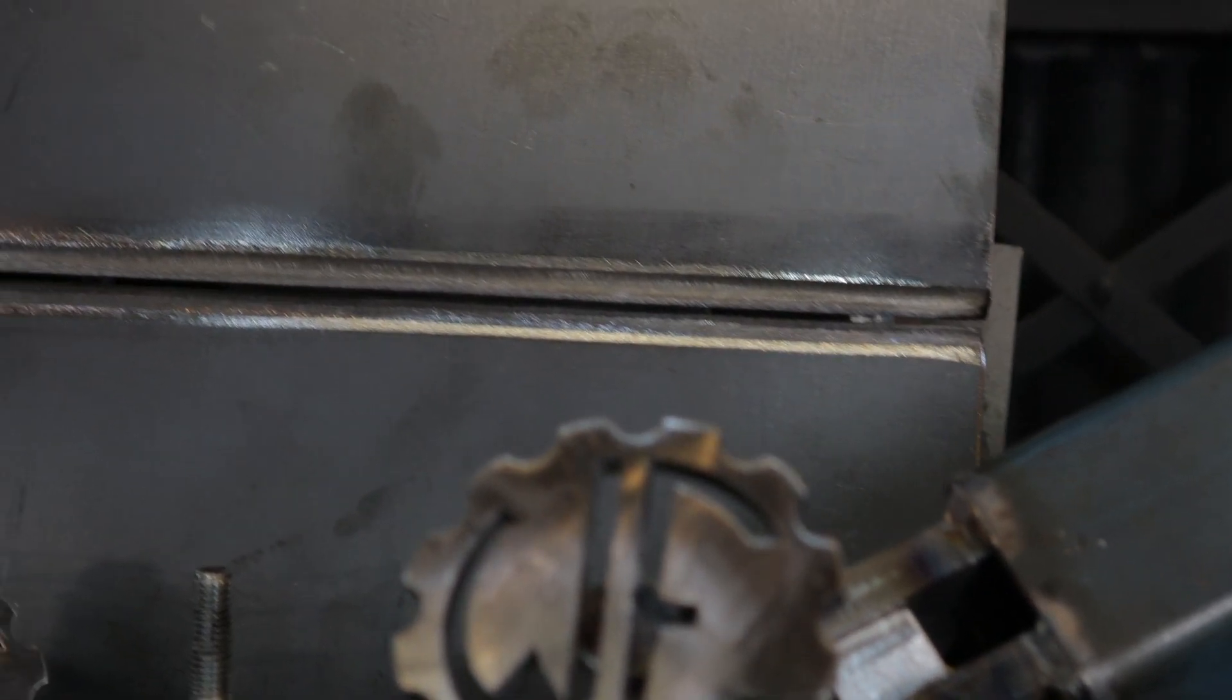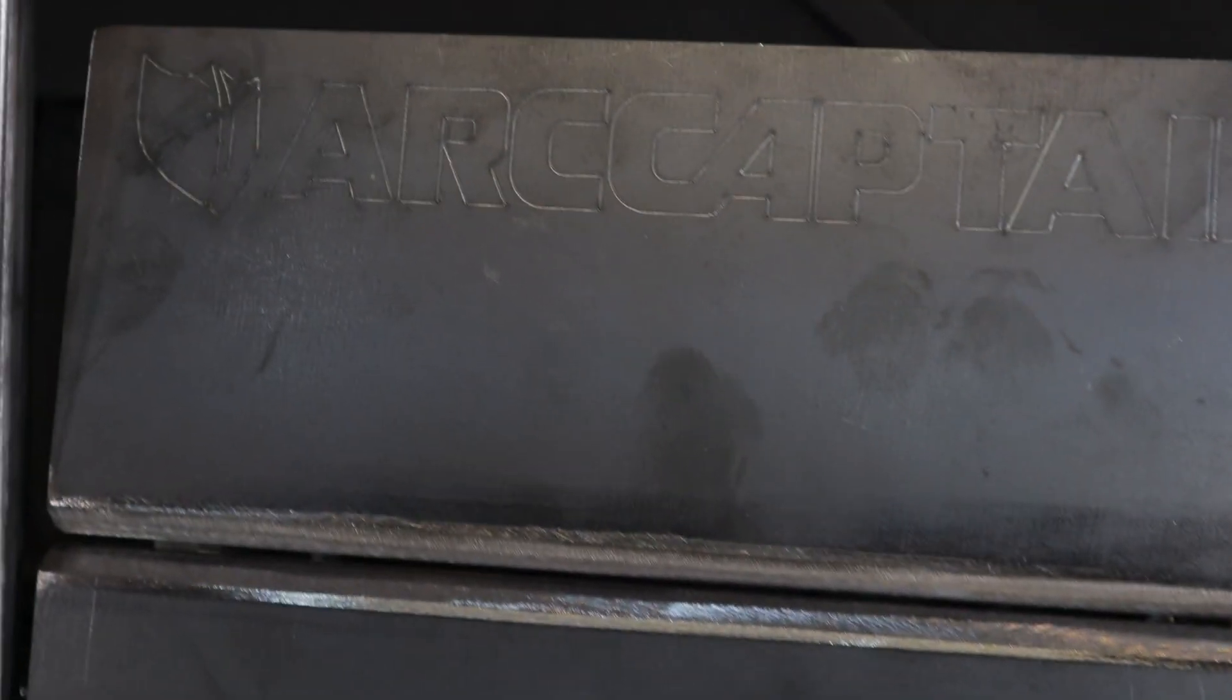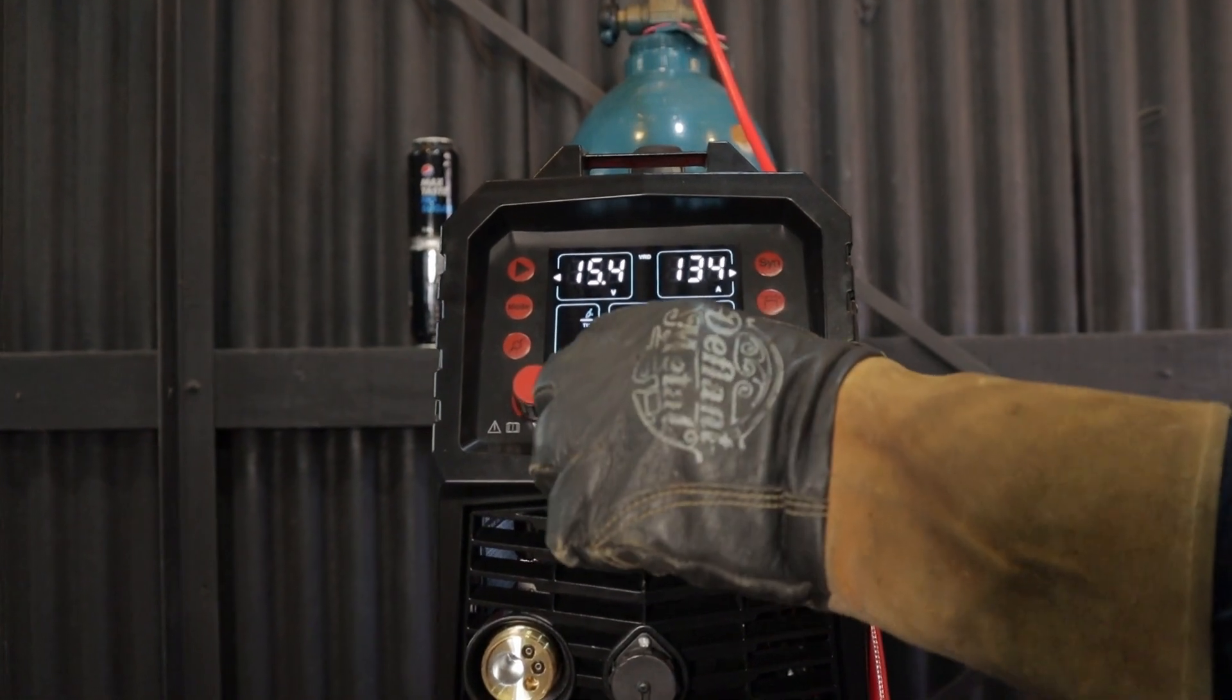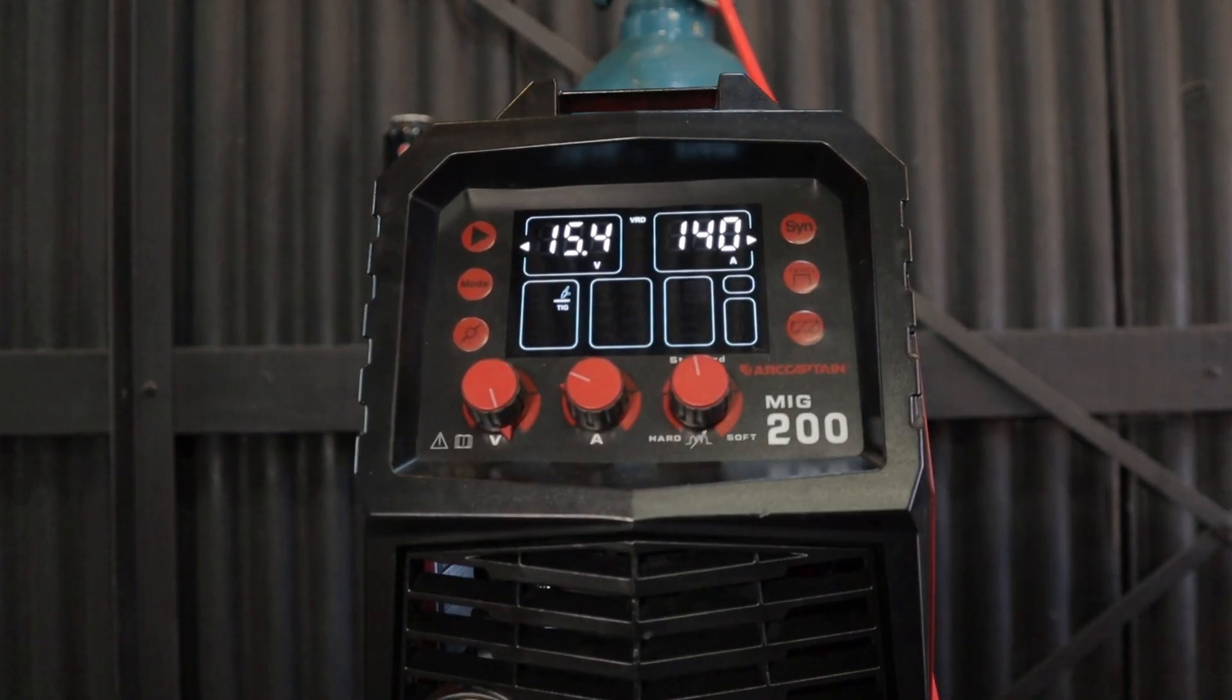If you're wanting to learn pipe welding, a multi-process welder can even do that. Here I tacked two welding test plates together that I'll be welding later in the video. This was at 140 amps and the same gas flow rate. I was using 3/32nd or 2.4 millimeter ER70S-6.